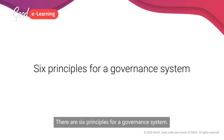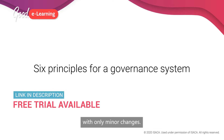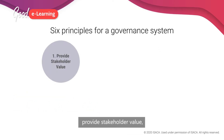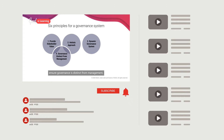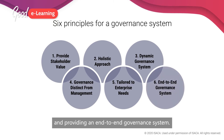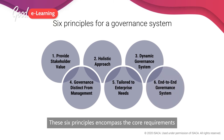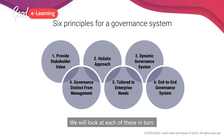There are six principles for a governance system. They are very similar to the principles set out in CoBIT-5, with only minor changes. These are: provide stakeholder value, adopt a holistic approach, produce a dynamic governance system, ensure governance is distinct from management, tailoring to meet enterprise needs, and providing an end-to-end governance system. These six principles encompass the core requirements of a governance system. We will look at each of these in turn.